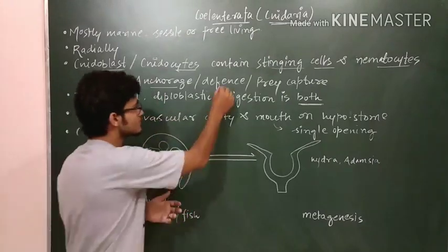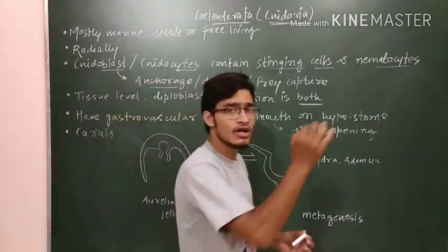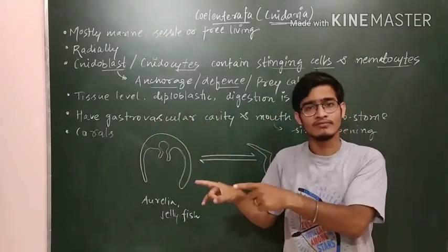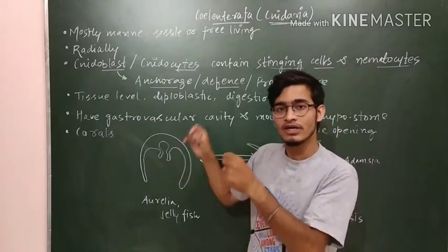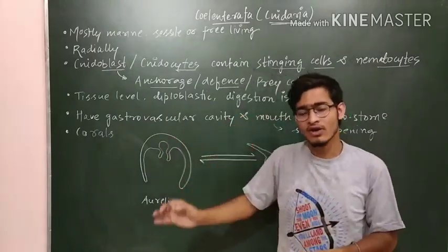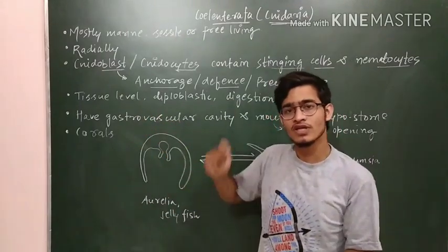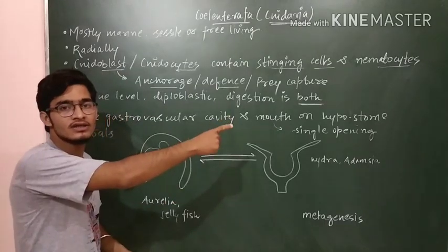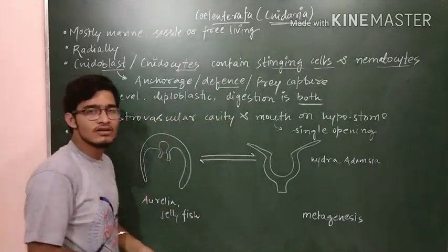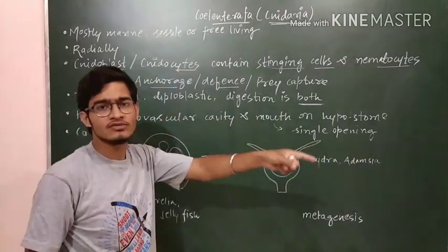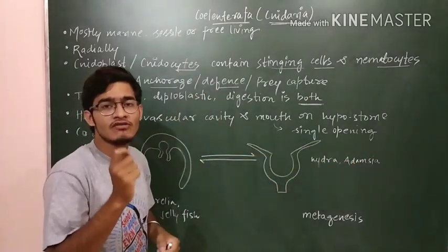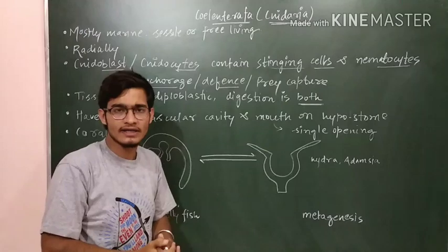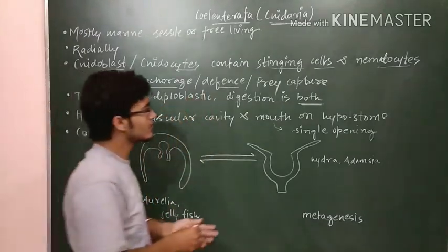Another function is defense. Whenever some organism comes closer to the Coelenterata and is recognized as an enemy, it will push that organism away by deploying nematocysts onto the other organism's body. These nematocysts contain toxins which will immobilize or harm that particular organism. So nematocysts also provide defense.